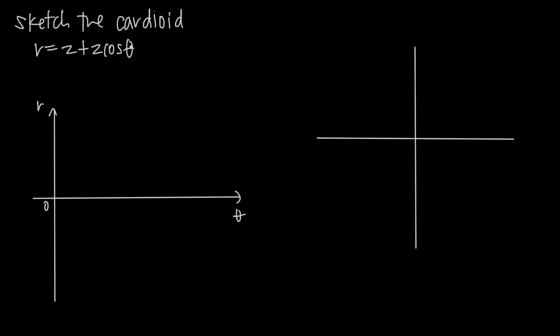This is a trick we always use: we always want to take the argument inside that trig function, in this case it's theta, and we want to set this equal to pi over 2.